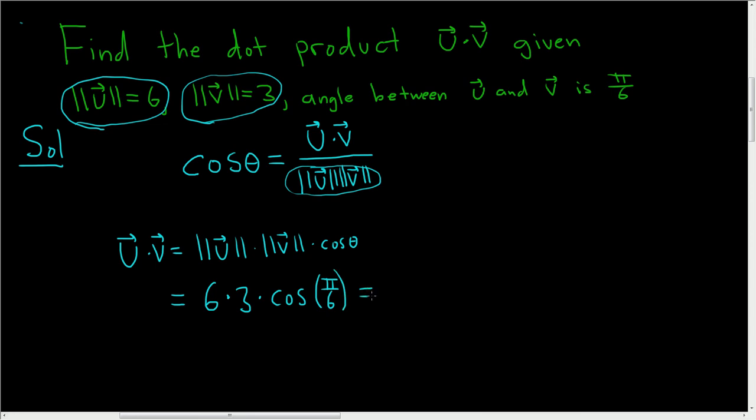So this is equal to, 6 times 3 is 18. And the cosine of pi over 6 is the square root of 3 over 2. And 2 goes into 18 nine times, so we get 9 square root of 3. And that is the dot product of u and v.